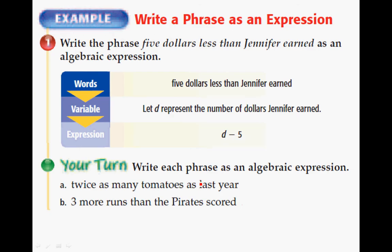Here's an example of how to break it down. Write the phrase $5 less than Jennifer earned as an algebraic expression. In words, we have $5 less than Jennifer earned. So you want to highlight. We know we have $5. We know that it's less than. If it's less than, we know it's going to be subtraction. And then Jennifer earned. Well, we don't know what she earned. But they went ahead and used D to represent the number of dollars she earned.